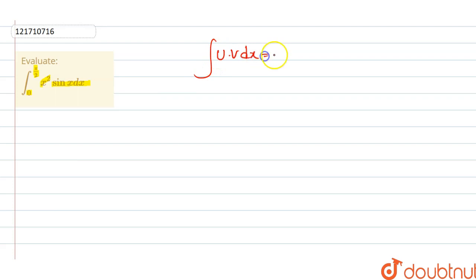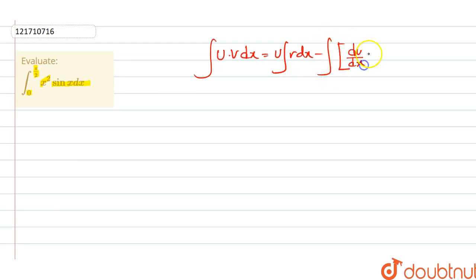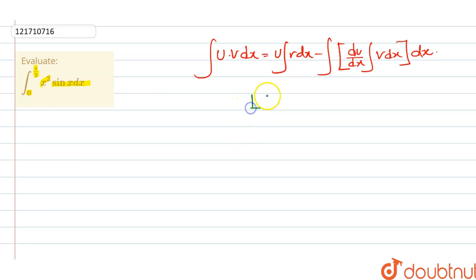The integration by parts formula is: ∫u·v dx = u·∫v dx − ∫(du/dx · ∫v dx) dx. We need to identify the first function and the second function. Particularly, what is the rule?